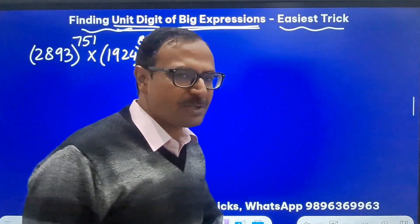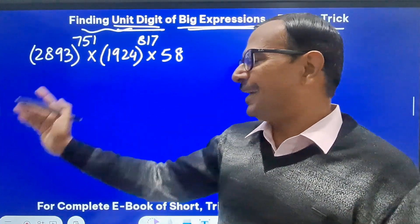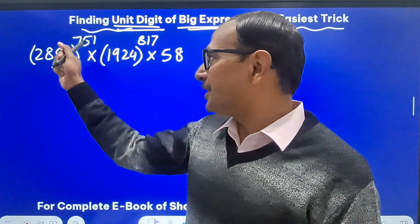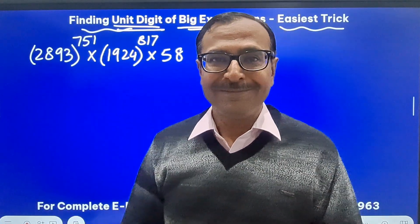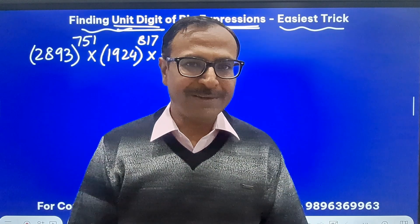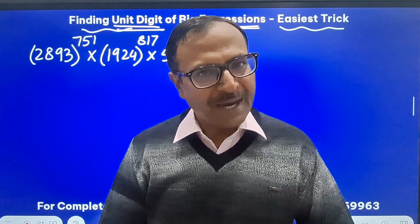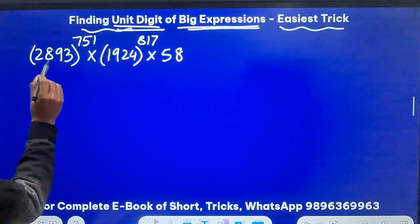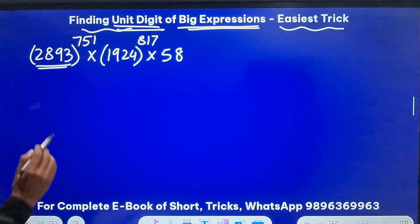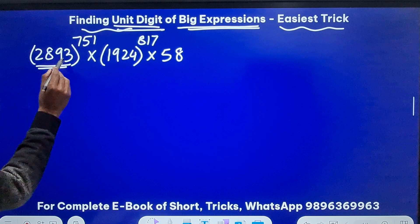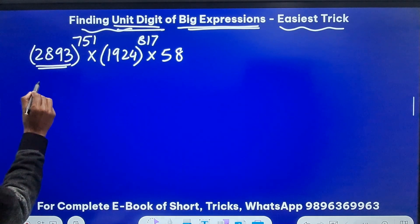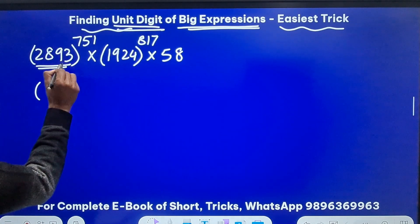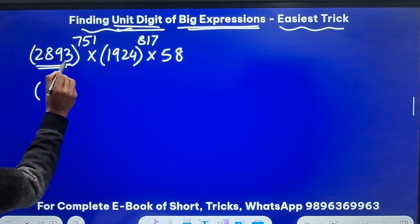Obviously friends nobody can solve this right, you can't even expand power 3 of 2893 leave about 751 so there has to be a trick and the trick is the first thing you need to understand is the entire number in the base doesn't matter. So what you have to do is to consider only the unit digit of the base that is 3 in this case, the unit digit.